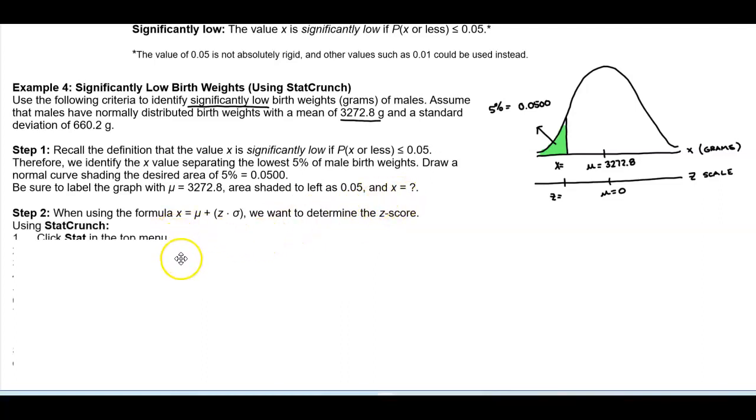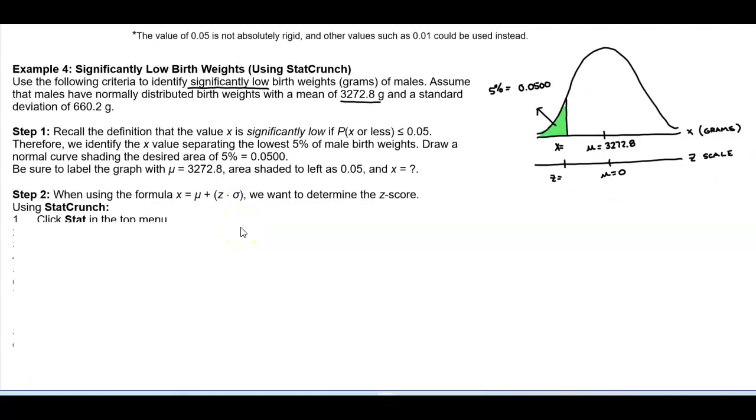Now we're going to use the following formula where X is going to equal the mean plus the quantity of the Z score times the standard deviation. So before we do that we need to find the Z score to plug it into the formula to find X.